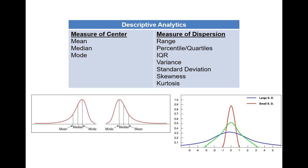We also have the skewness of data. This is a negatively skewed distribution and this is a positively skewed distribution. Based on that skewness, we know how the mode, median, and mean are sorted. Finally, we have the data kurtosis.